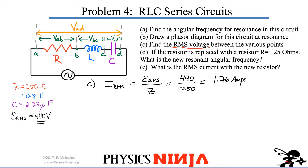The voltage from A to B, VAB, is the voltage across the resistor. In RMS quantities, that's the RMS current multiplied by the resistance. In this case it's simply equal to 440 volts.